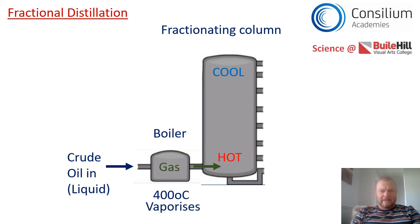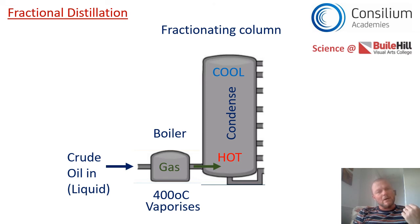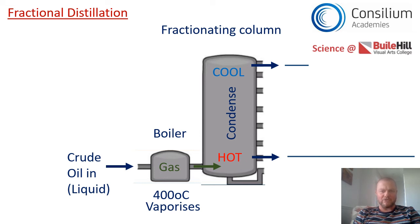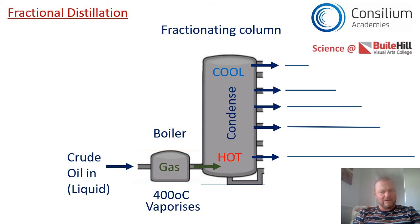Something else happens: those hot gases are going to condense — they're going to turn back into liquid. So we get petrol as a liquid, diesel as a liquid. But crucially, those alkanes only condense when they find the right temperature. The first substance to condense is bitumen — that really long alkane — and it condenses at the highest temperature, at the bottom of the column. What condenses at the very top is the shortest alkane, which is LPG, and all the others condense at temperatures in between.